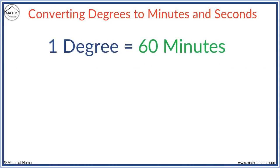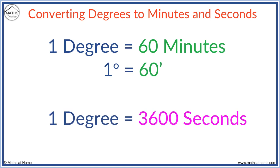One degree is equal to 60 minutes, with minutes represented by a dash, and one degree equal to 3,600 seconds, with seconds represented with two dashes.